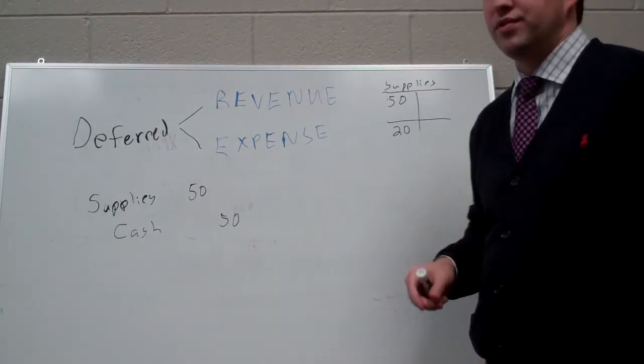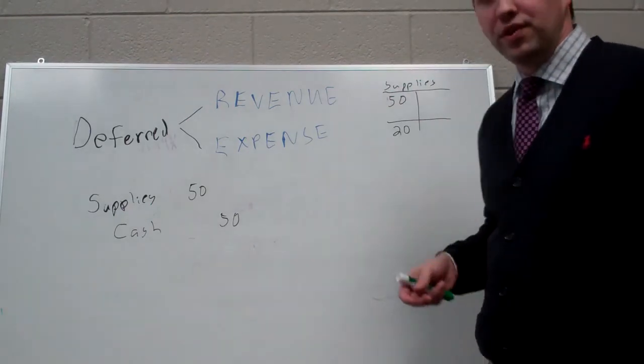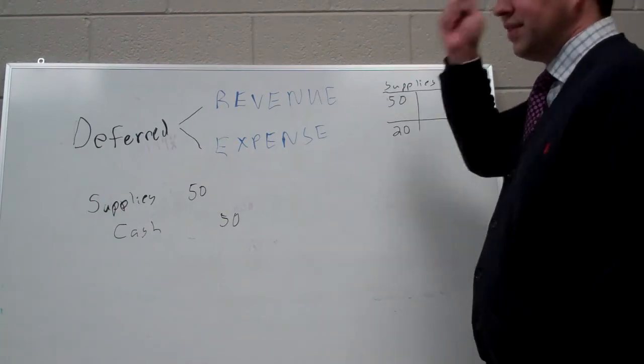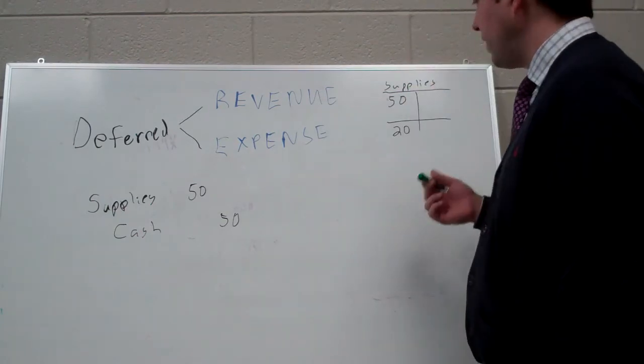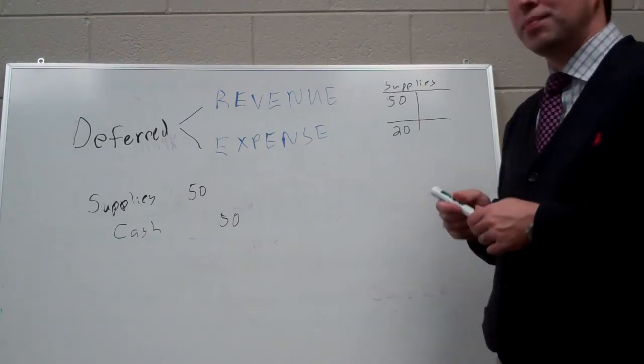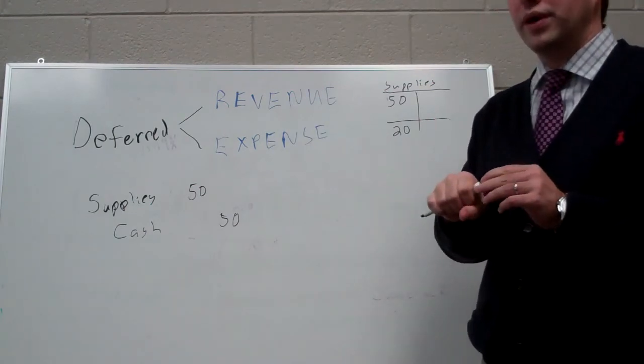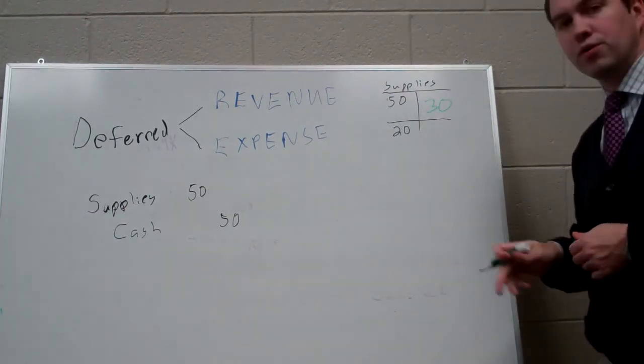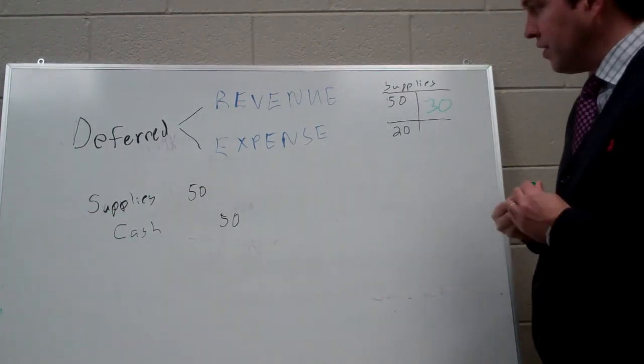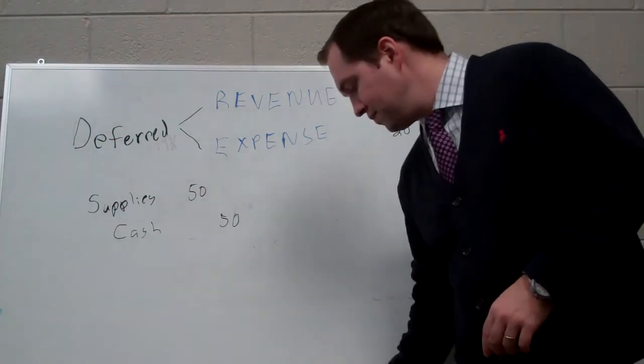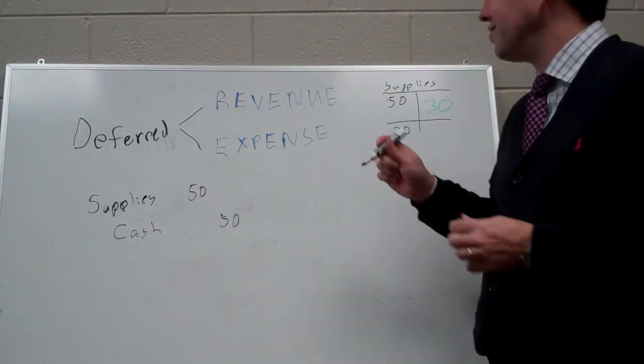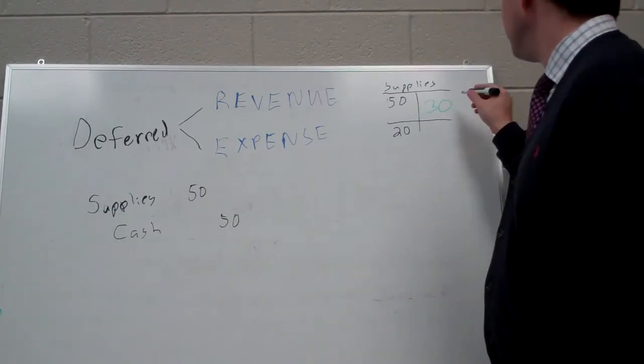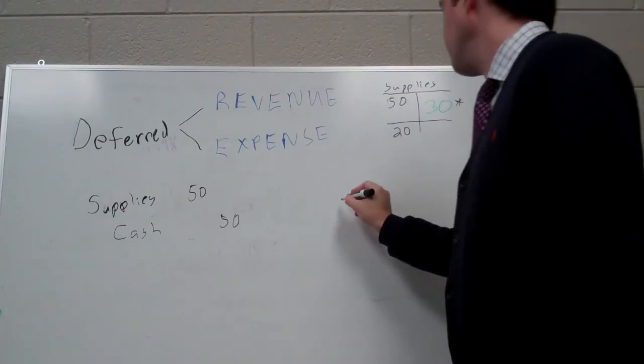Well, that tells us something must have happened to $30 worth of supplies. What typically happens? We put staples in paper. We write on post-it notes. We use ink pens and then throw them away when they dry out or they're done. This supplies account went from $50 to $20 because we used $30 worth of supplies. So what we need to do now is to expense those supplies.